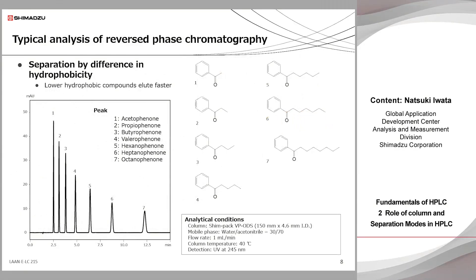This slide shows a typical analysis of reversed phase chromatography. When a mixture of alkylphenones having the same basic structure but different alkyl chain lengths are separated by the C18 stationary phase, the compounds with shorter alkyl chains elute faster from the column. In other words, lowly hydrophobic compounds elute faster, and highly hydrophobic compounds are retained in the column for a long time and elute slower. In this way, chromatographic separation is accomplished by the difference in the hydrophobicity of the compounds.